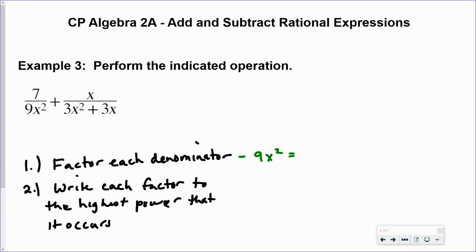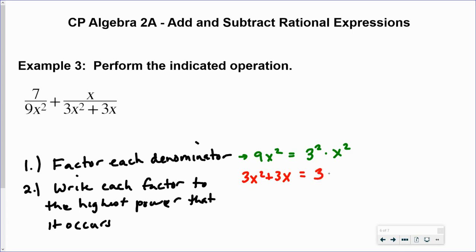For 9x squared, the only thing we can do is write 9 as 3 squared, giving us 3 squared times x squared. For the second denominator, 3x squared plus 3x, we factor by looking for a GCF. There is a GCF of 3x in those terms: dividing 3x squared by 3x gives x, and dividing 3x by 3x gives 1. So 3x squared plus 3x factors as 3x times x plus 1.